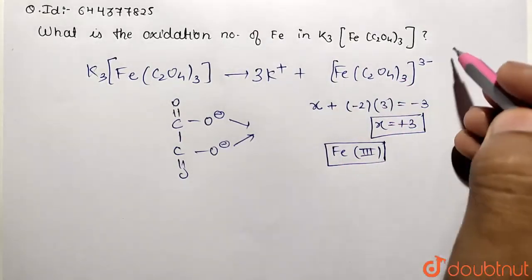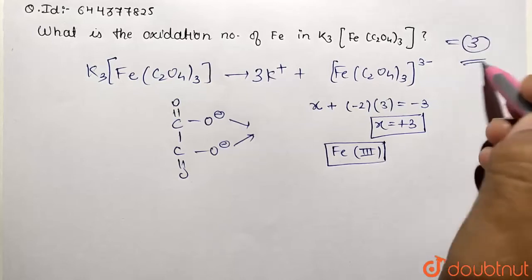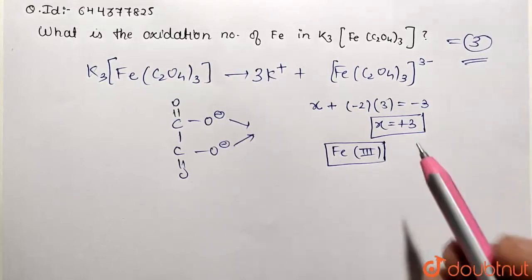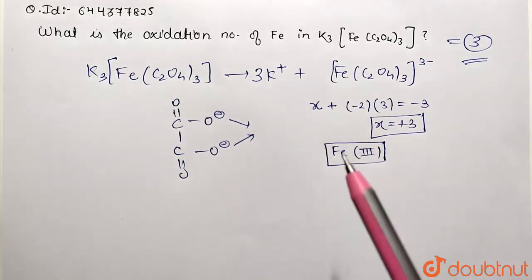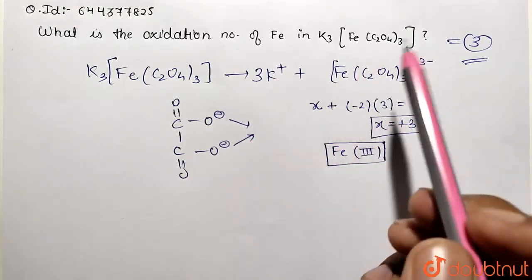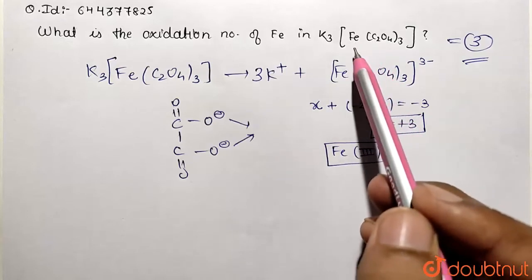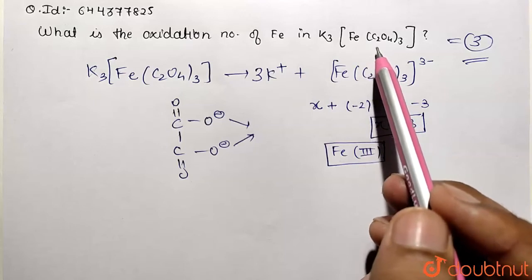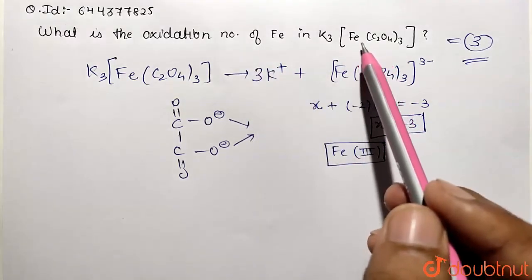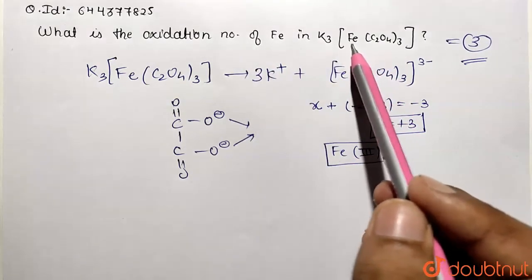So in this way you can easily calculate the oxidation number for any given complex, which represents the complex coordination with different types of ligands present. Oxidation number is of the central metal atom. So this is the central metal atom, which is iron over here. This was the solution, we have the answer as three. Thank you.